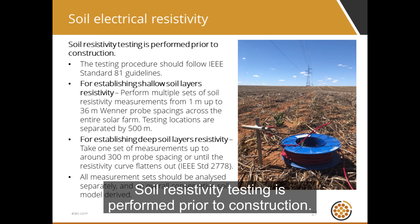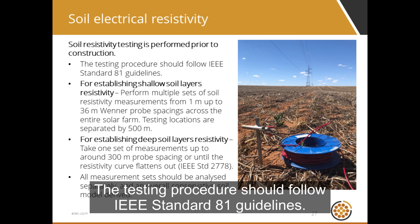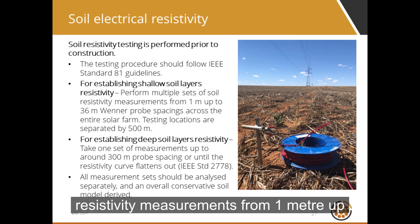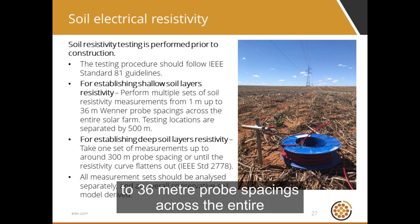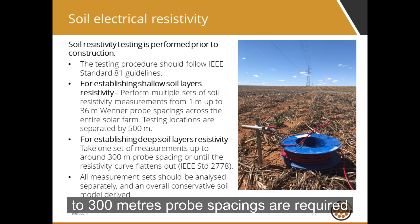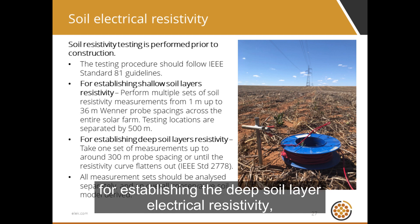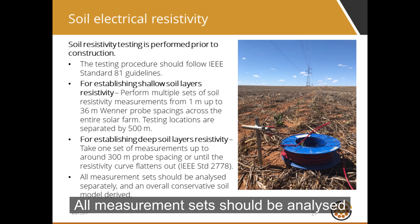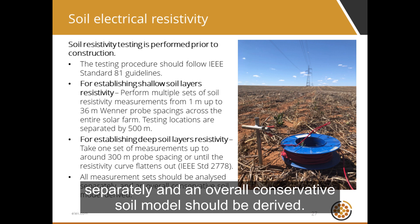Soil resistivity testing is performed prior to construction, following IEEE Standard 81 guidelines — note that a new version of this standard is being released. We recommend performing multiple sets of soil resistivity measurements from 1 meter up to 36 meter probe spacings across the entire solar farm, with testing locations separated by 500 meters. A single set of measurements of up to 300 meters probe spacings is required for establishing the deep soil layer electrical resistivity, useful for fault current distribution calculations. All measurement sets should be analyzed separately, and an overall conservative soil model should be derived.